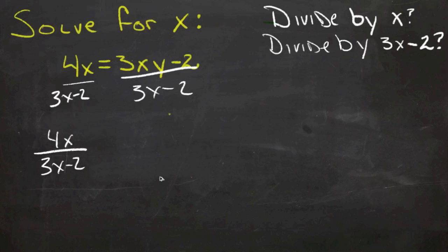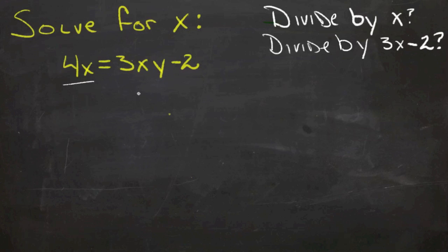So let's take a look at another option here. Here's what I would probably do if it was me. I would go through, and the first thing I would do is subtract that 3xy from both sides. Instead of dividing first at all, I'd subtract.